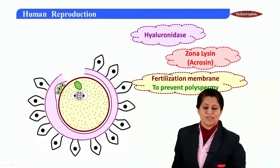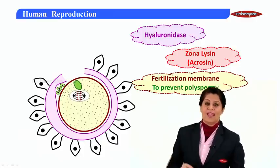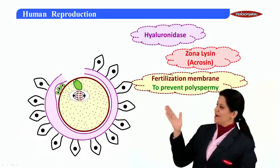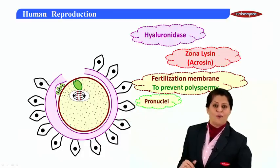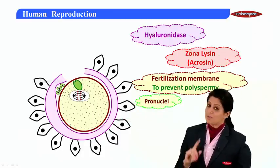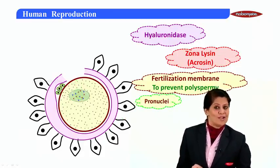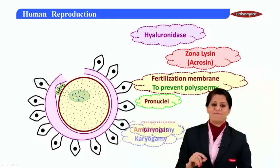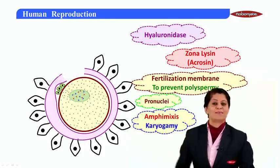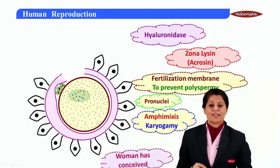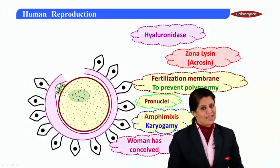Both nuclei — the sperm nucleus and the egg nucleus — absorb a lot of water and start growing inside. We now call them pronuclei. The sperm pronucleus fuses with the egg pronucleus; we call this process amphimixis or karyogamy — karyon meaning nucleus, gamy meaning marriage. And this is when we say the woman has conceived or she is pregnant.